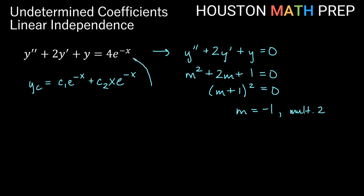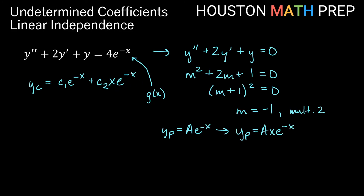Looking at g of x, we have a multiple of e to the negative x. Normally we'd choose y sub p equals a e to the negative x, but that's a constant multiple of the c1 term. Multiplying by x gives ax e to the negative x, but that's a constant multiple of the c2 term. So we must multiply by x one more time and choose y sub p equals ax squared e to the negative x.